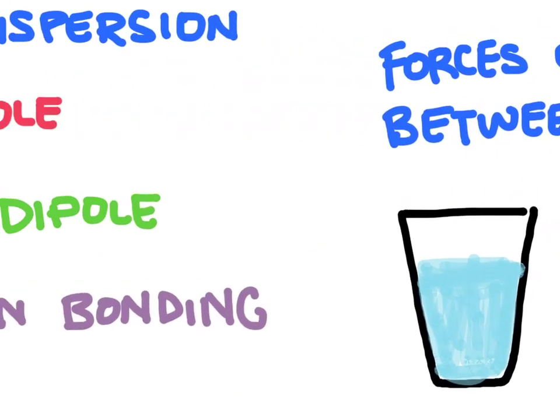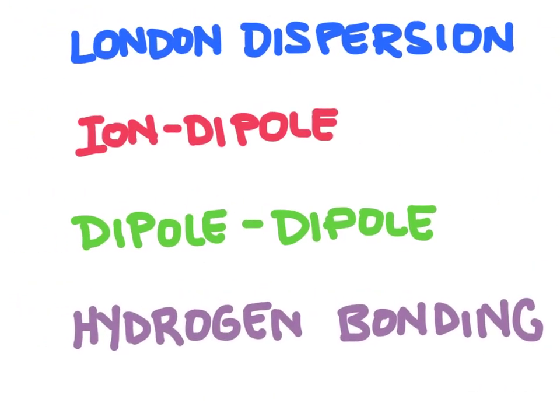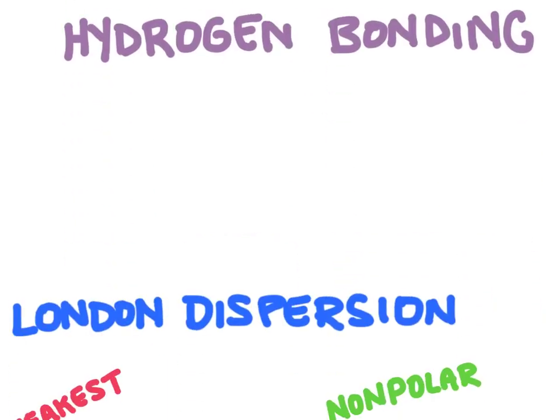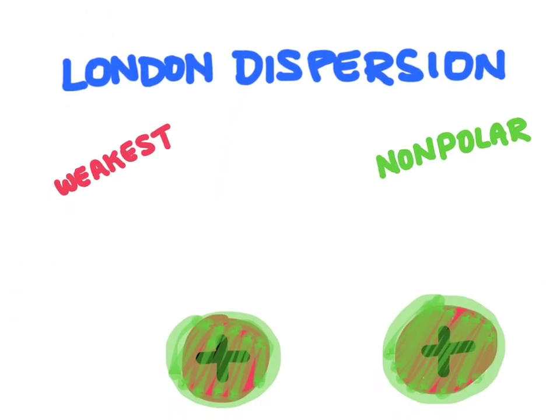There are four intermolecular forces that we're going to talk about here: London dispersion forces, ion-dipole, dipole-dipole, and hydrogen bonding. Let's start with the London dispersion forces.